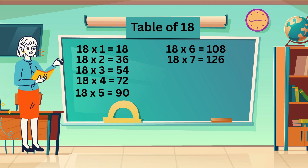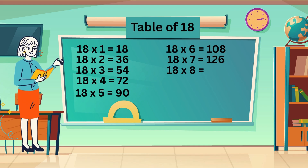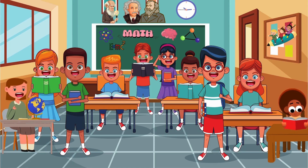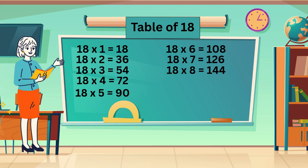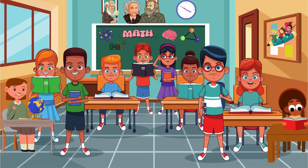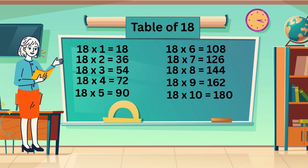18 sevens are 126. 18 eights are 144. 18 nines are 162. 18 tens are 180.